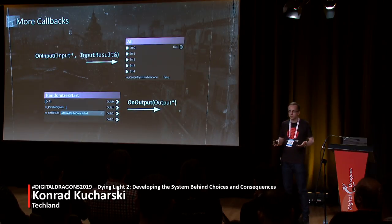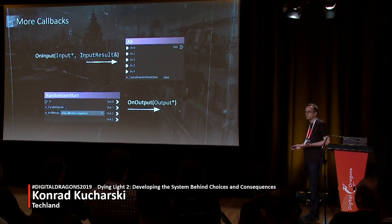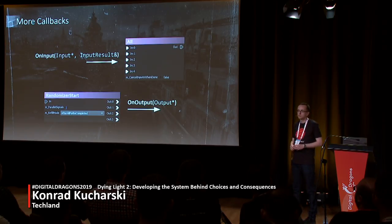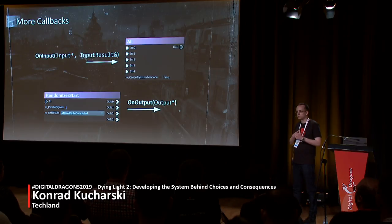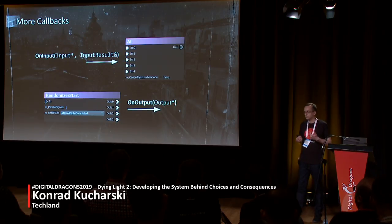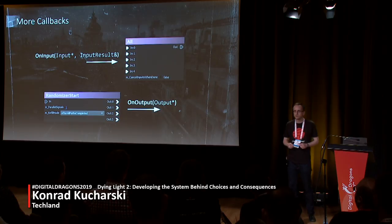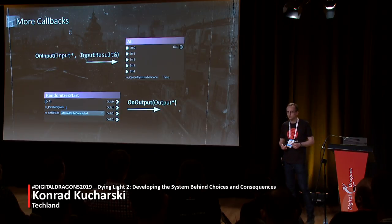Until now I only told you about two callbacks: on-enter and on-execute. For some time we thought we could create the whole history using only these two callbacks. But unfortunately we were unable to correctly restore the state of quests — we lacked two pieces of information: the order in which signals were received and the order in which signals were sent from logics. These are represented by on-input and on-output callbacks, so we had to add them to our call stack. It was a difficult decision because it at least doubled the size of the call stack, which was already large.